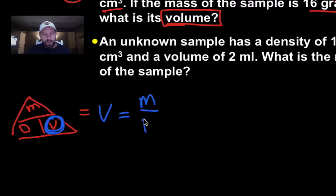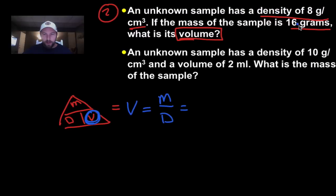And we can go back in and substitute just like we normally do. So, we have a mass of 16 grams over our density of 8 grams per centimeter cubed. So, we can do this math. 16 divided by 8 is 2.